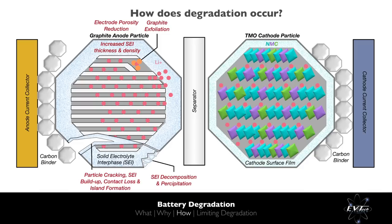In particular systems, the SEI is brittle. At high state of charge, the anode can expand by up to 13%, and under these conditions the solid-electrolyte interface itself can crack or decompose at high temperatures. The lost solid-electrolyte interface will reform, resulting in additional lithium-ion consumption.